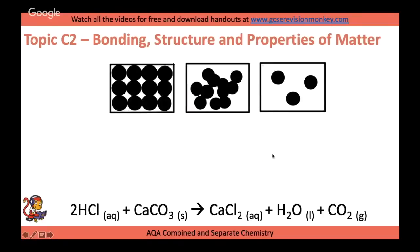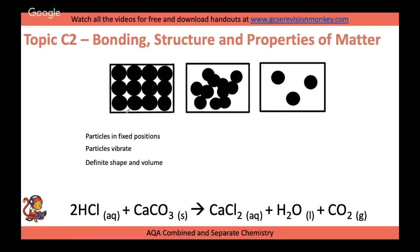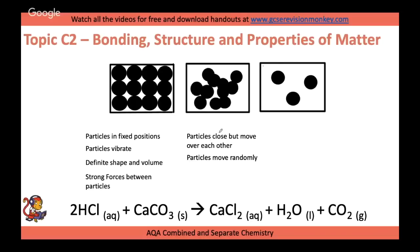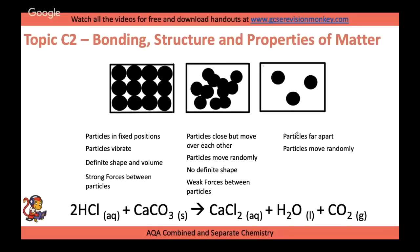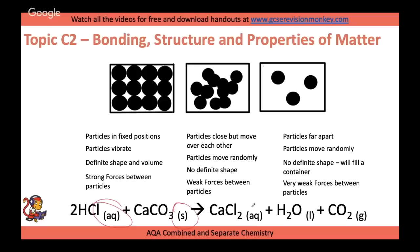In solids, particles are in fixed positions and vibrate, taking a definite shape. In liquids, particles are still close but can move over each other. In gases, particles are far apart and move randomly in all directions. State symbols: (aq) = aqueous, (s) = solid, (l) = liquid, (g) = gas.